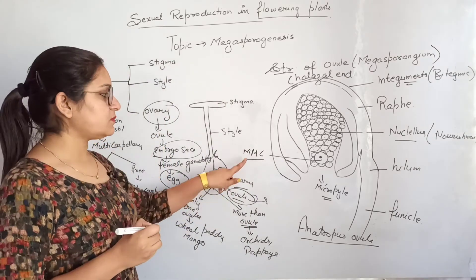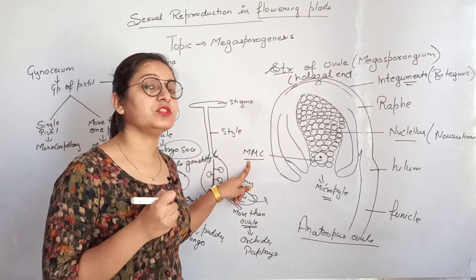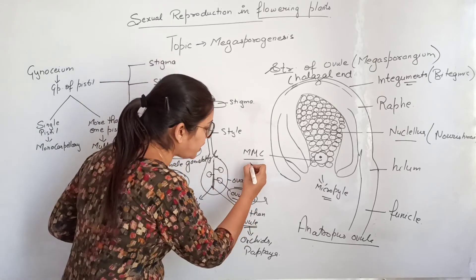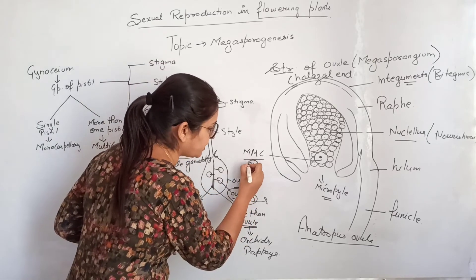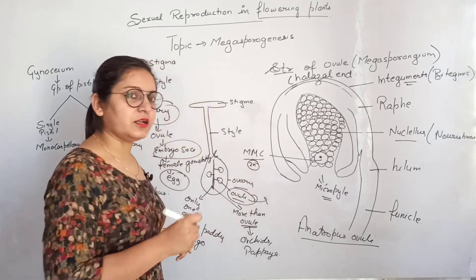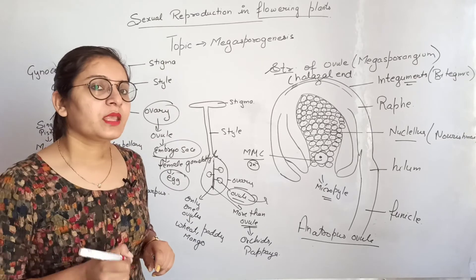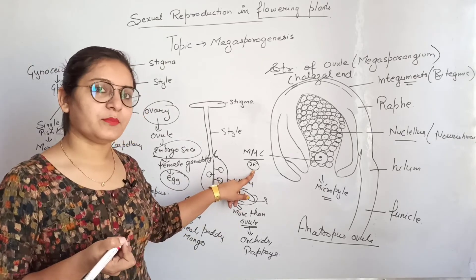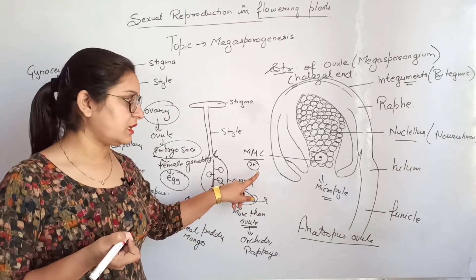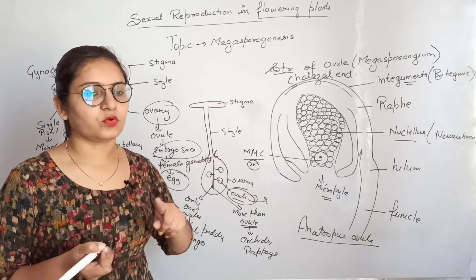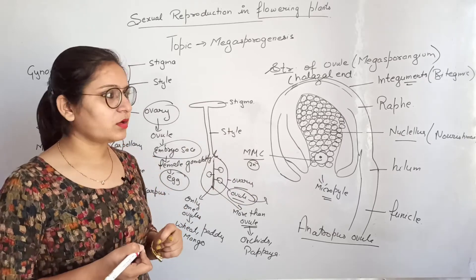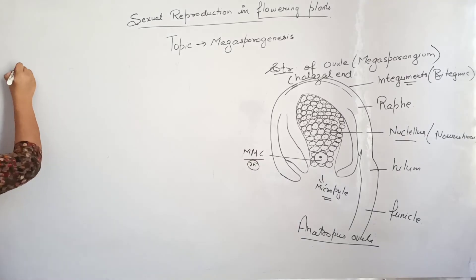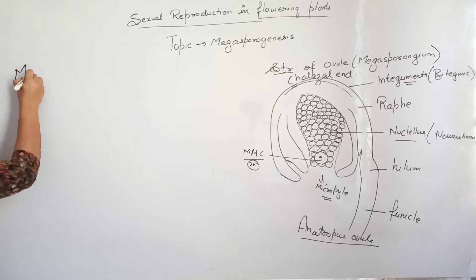The megaspore mother cell undergoes megasporogenesis to form megaspores. This diploid megaspore mother cell undergoes meiosis to form megaspores that eventually form the embryo sac. Let's talk about megasporogenesis.